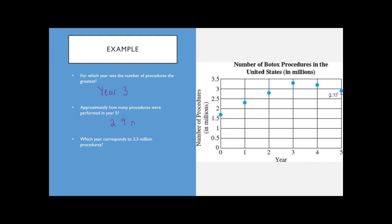We should always include the units, so it's 2.9 million procedures — not just 2.9 procedures. Then, which year corresponds to 2.3 million procedures? Halfway between 2 and 2.5 is 2.25, so you're looking for the point closest to that value. Moving along the graph, that would be year one. You use the grid to orient yourself and figure out where those numbers fall.